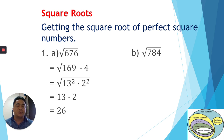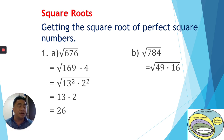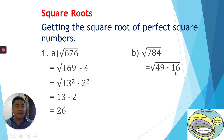Our second example is the square root of 784. Using the tree diagram or short division method with prime numbers, we find the prime factors. We get 49 times 16. Both 49 and 16 are perfect square numbers — the square root of 49 is 7 and the square root of 16 is 4. We write 49 as 7² and 16 as 4².